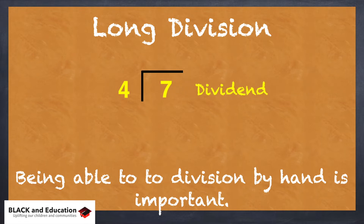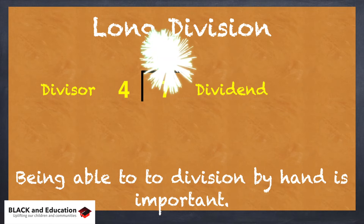We have 7 divided by 4. 7 is the dividend and 4 is the divisor, so 4 is going into 7. We ask ourselves: how many whole times can 4 go into 7?